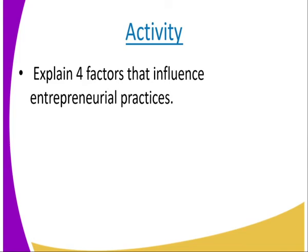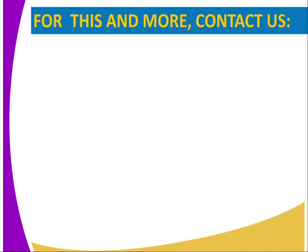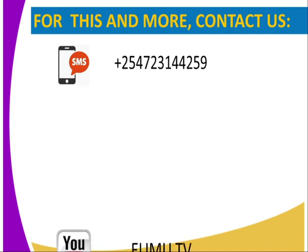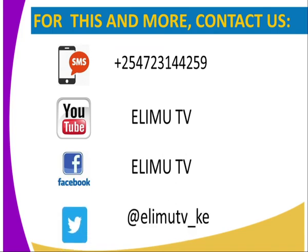Activities: Explain four factors that influence entrepreneurial practices. Assignment: Outline the characteristics of goods. For more information, you can refer to the KLB 2011 student book one, Inventor student book one, third edition. If you have any questions, you can send to us through SMS, YouTube, Facebook, or Twitter. Stay tuned to EDMTV. Thank you.